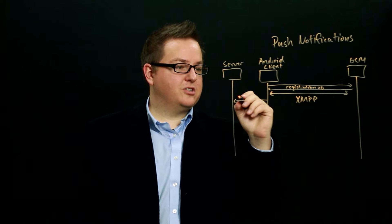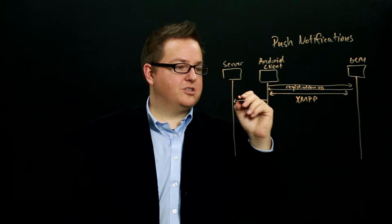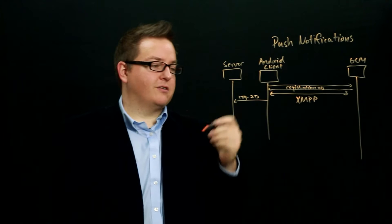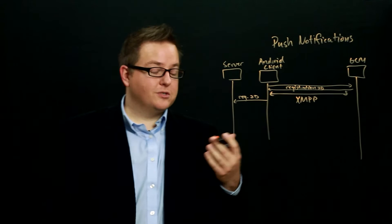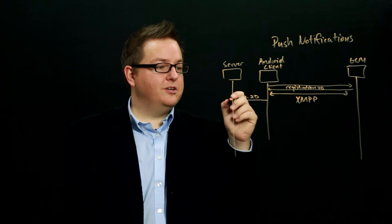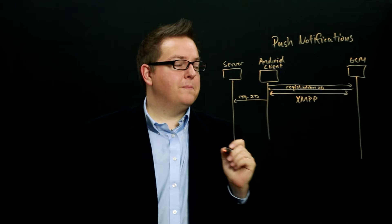And then what the Android client does is it sends its registration ID to the server, your server, doing something like a traditional HTTP post, or put, or whatever it needs to do, depending on your API, to your server. So now your server knows the unique ID of this Android client on this particular Google Cloud messaging system.